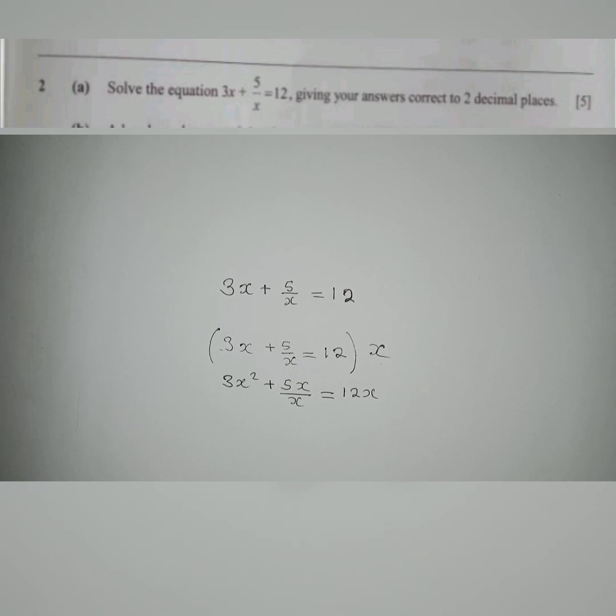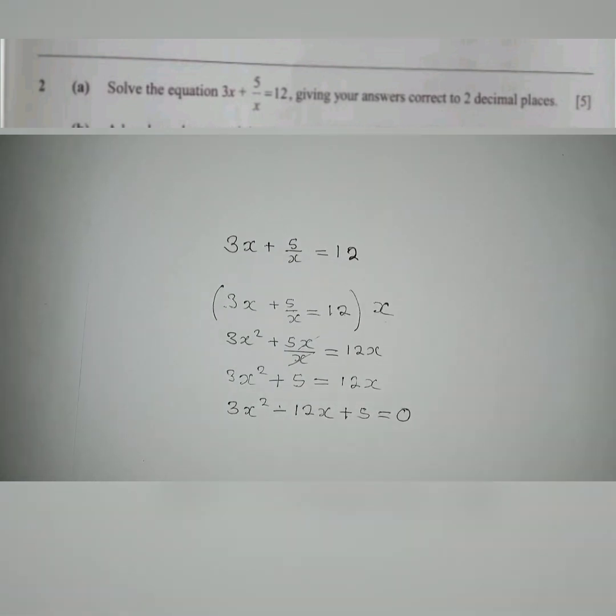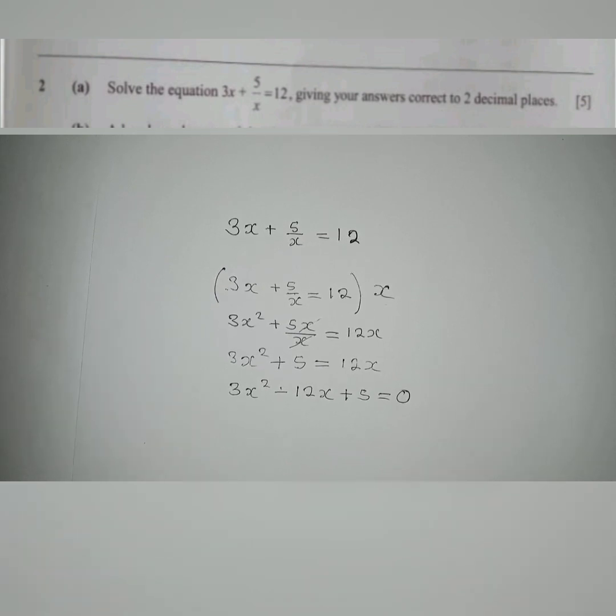This is what we have. Our next move here will be to simplify it. This and this will cancel, we remain with 5 here, also equals 12x here. Now we can put it in standard form, so standard form is supposed to be like this: 3x squared minus 12x plus 5 equals 0. You can see that this is a quadratic equation.